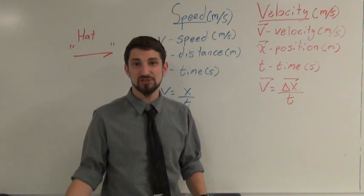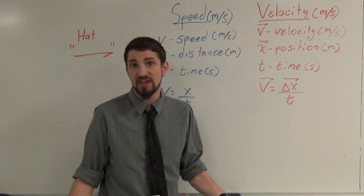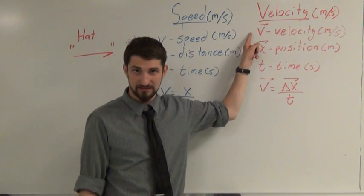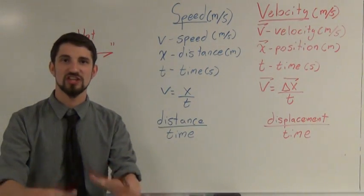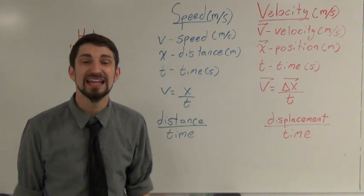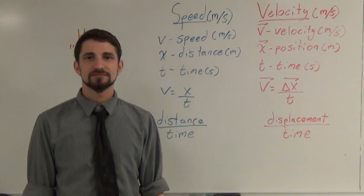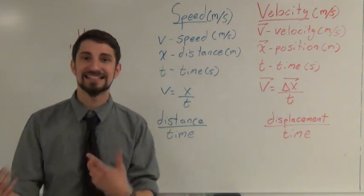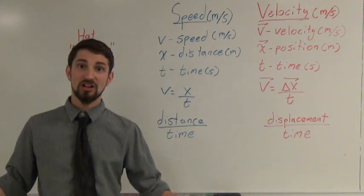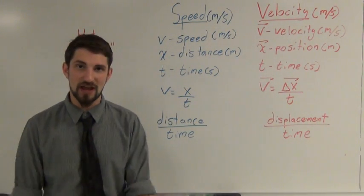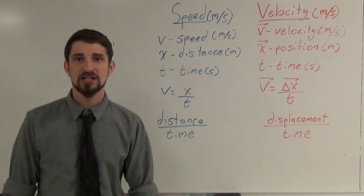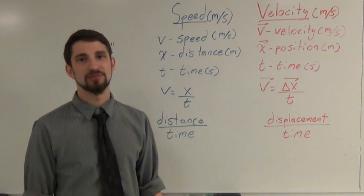The most common mistake people make is mixing up speed and velocity. Speed is a scalar measured in meters per second — direction does not matter. Velocity is a vector — direction does matter — and it's also measured in meters per second. Speed is distance over time; velocity is displacement over time.